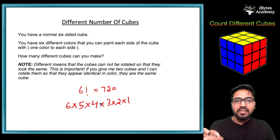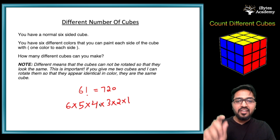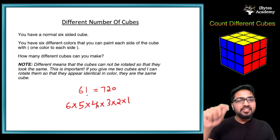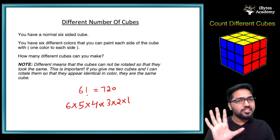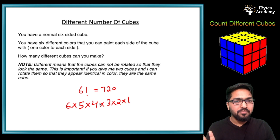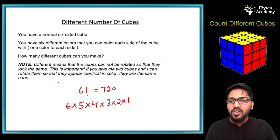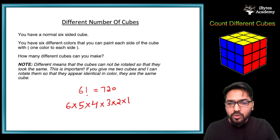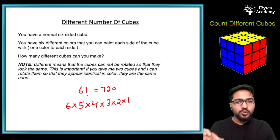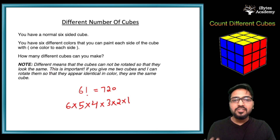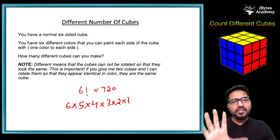But the problem is that in this case we are considering the same cube again and again. Different means that the cubes cannot be rotated so that they look the same. If you rotate a cube, it becomes the same cube again — so many of those 720 arrangements are actually identical cubes in different orientations.